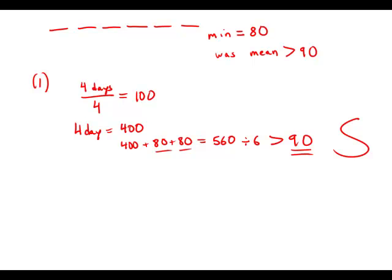Now forget about statement number one, let's focus on statement number two. Statement number two tells us that for the three days with the smallest number of people registered, the average for those three days was 85.